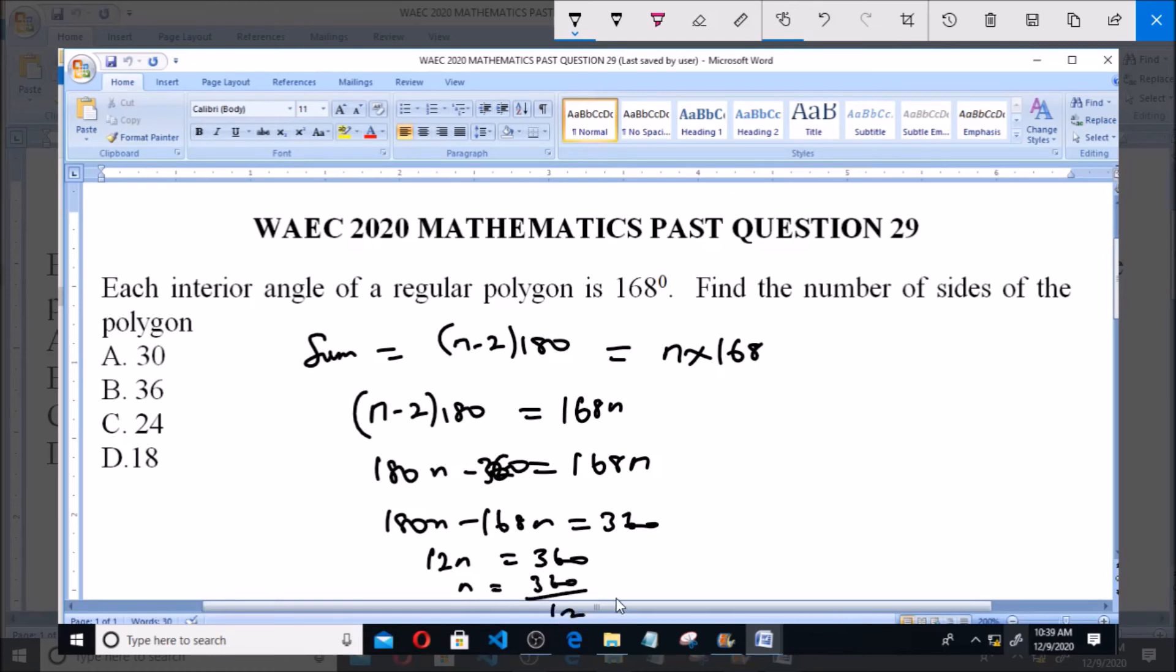Then 12n equals 360. n equals 360 over 12, and that is equal to 30.